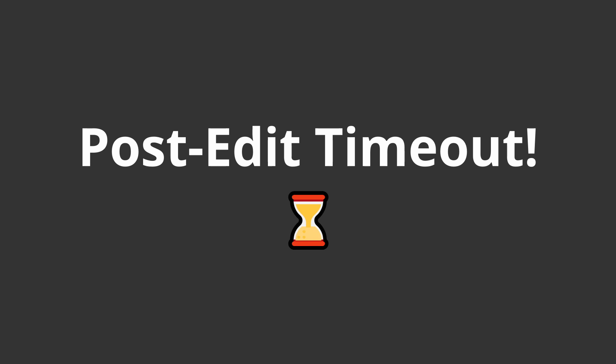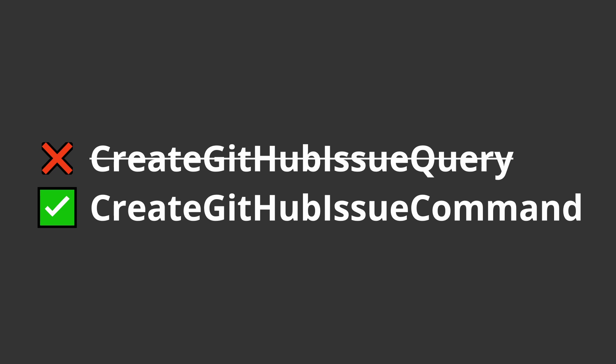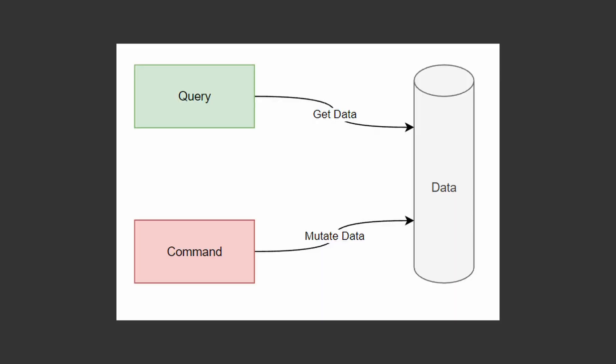Post-edit interruption: I consistently call this the create GitHub issue query, but this is not a query — we're not getting data, we're creating data. So technically, we should call this the create GitHub issue command. By convention, something that mutates state should be classified as a command, and something that just retrieves data should be classified as a query. Throughout this video I'm going to be referring to it as a query, but it should be a command — we'll fix that at the end.